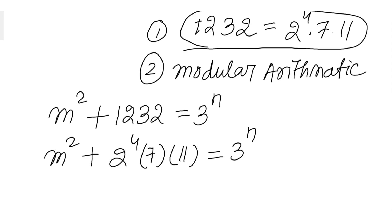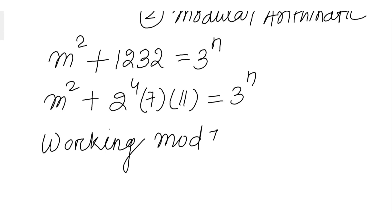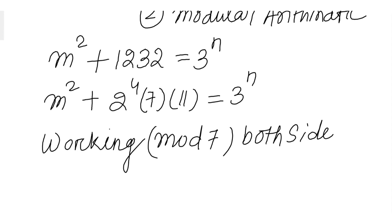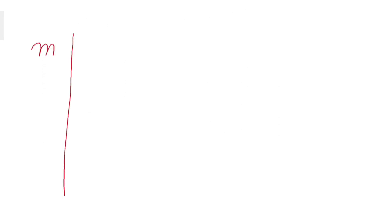If we take 2 to the power of any number mod both sides, this is not going to work because the residue of any perfect square mod 2 is either 1 or 0. Hence we have to take either mod 7 or mod 11. So let's work mod 7 on both sides. First, let's see what the residues of perfect squares are when taken mod 7.